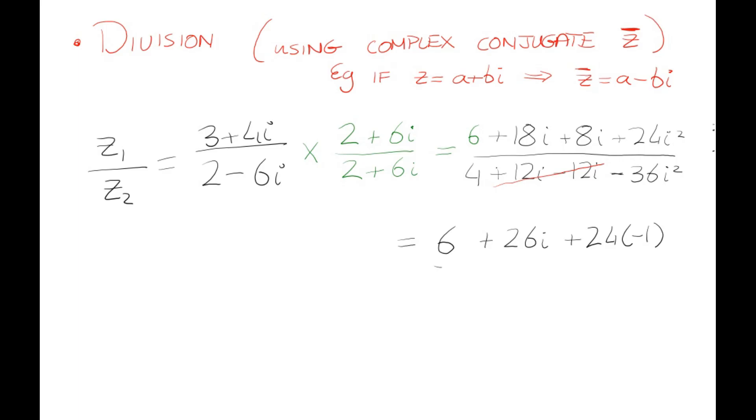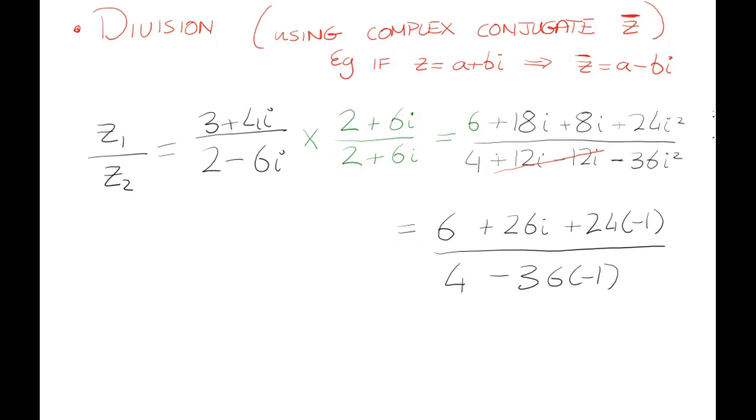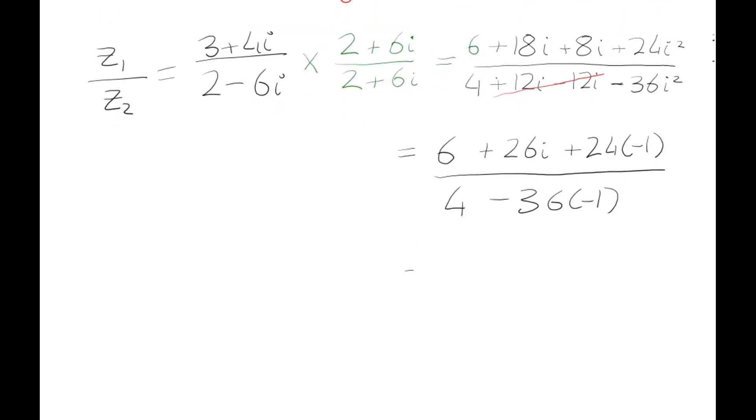That gives us 6 and -24, which is -18, plus 26i on the top, and on the bottom we have 4 plus 36, which is 40. We normally have to look at it like a + bi, and it doesn't really look like that yet.